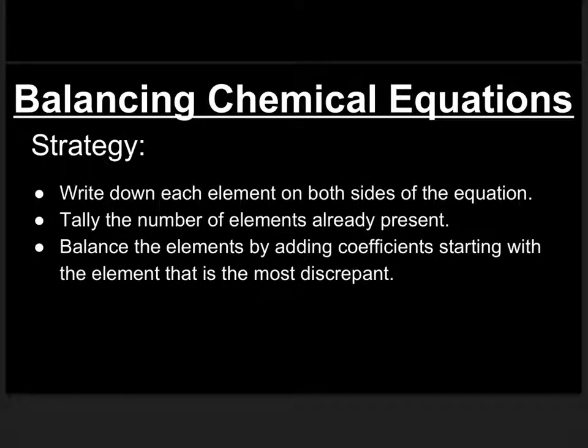Just to talk quickly here about some strategies: what you want to do for starters is write down each element on both sides of the equation. As I mentioned to you before, you should have the same elements on both sides. If you come up with something only on one side of the equation, definitely look again. It means you probably missed it somewhere in the equation. As I mentioned before, you want to tally the number of elements that are already present before you go through and balance anything.